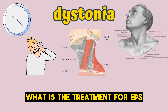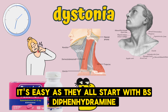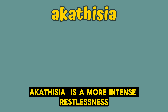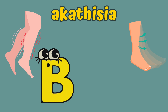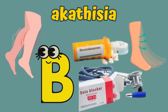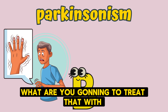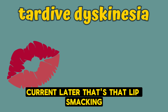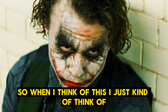Akathisia is intense restlessness — treat with benzos or a beta blocker. Parkinsonism is treated with benztropine. Tardive dyskinesia is a chronic condition appearing later — lip smacking, facial tics, and jerking limb movements.